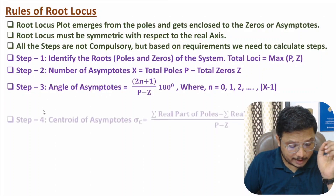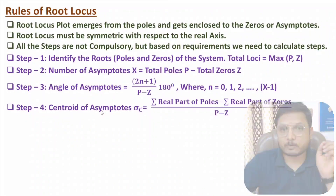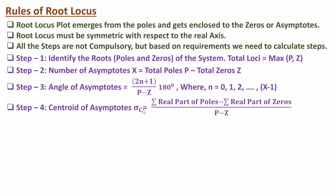In the fourth step we need to identify the centroid of asymptotes, denoted sigma_c. That equals the summation of real parts of poles minus the summation of real parts of zeros, divided by the number of poles minus the number of zeros. First we identify the location of poles and zeros, then plot the s-plane, then identify the number of asymptotes, angle of asymptotes, and centroid of asymptotes. Then we initiate the plot — lines emerge from the poles and get enclosed to the zeros or asymptotes, and the root locus is symmetric with respect to the real axis.